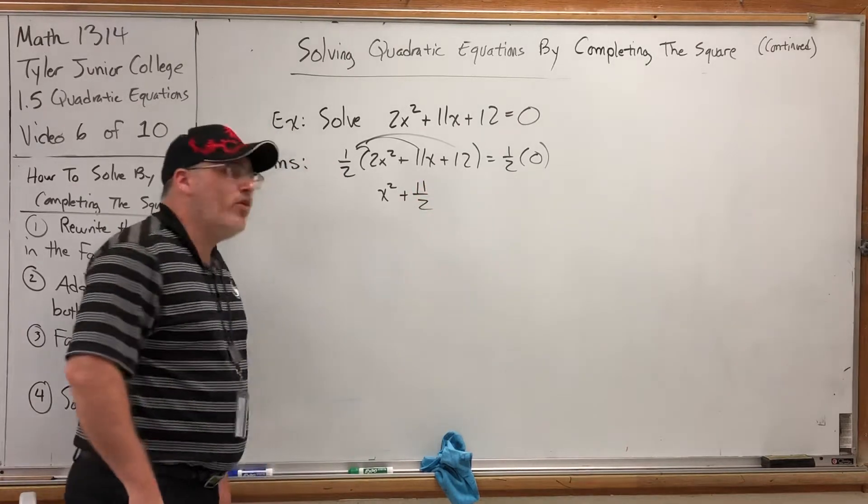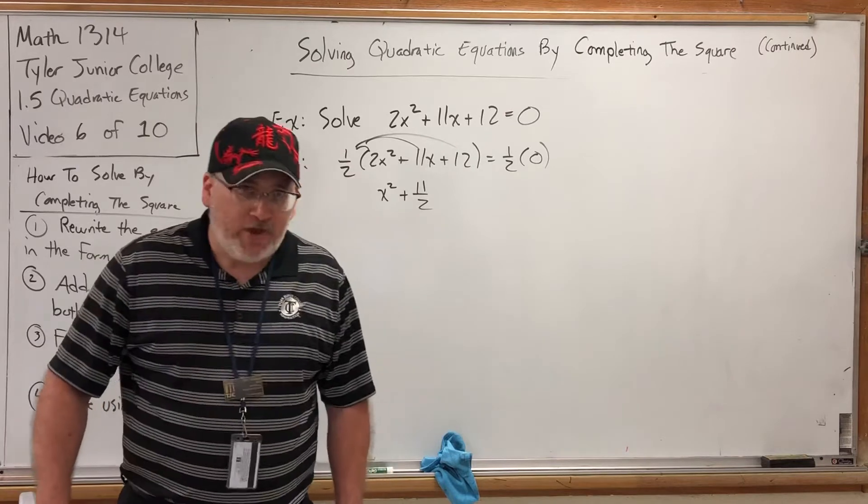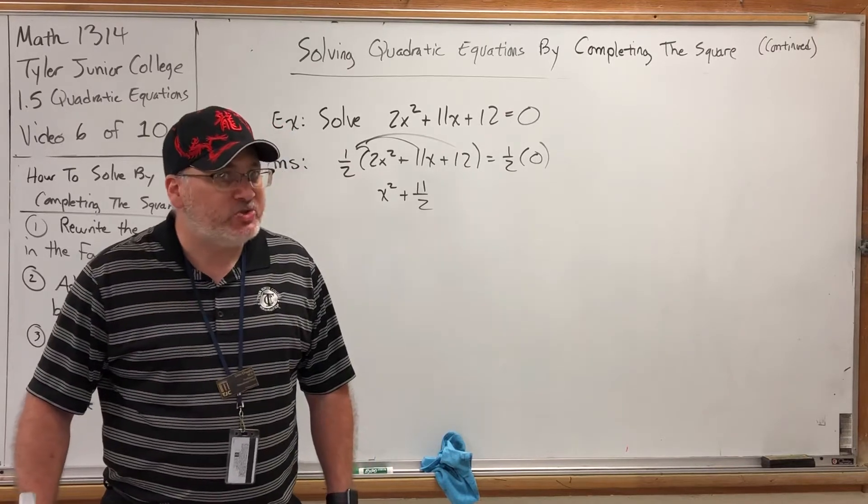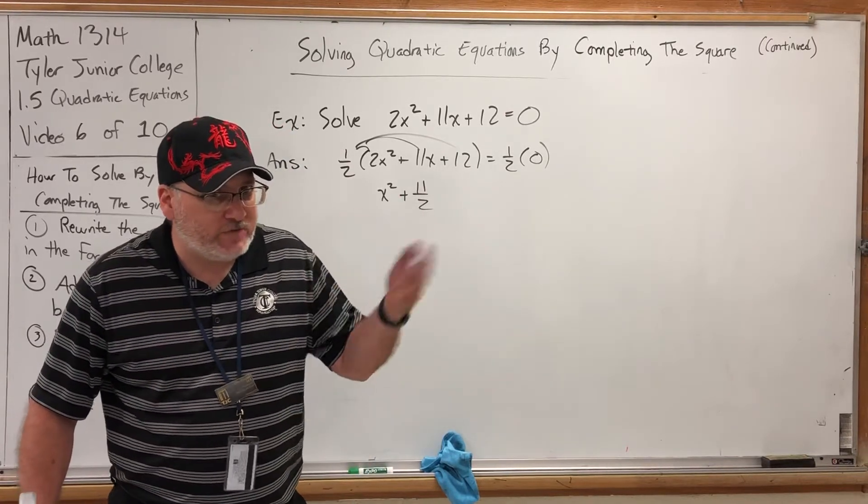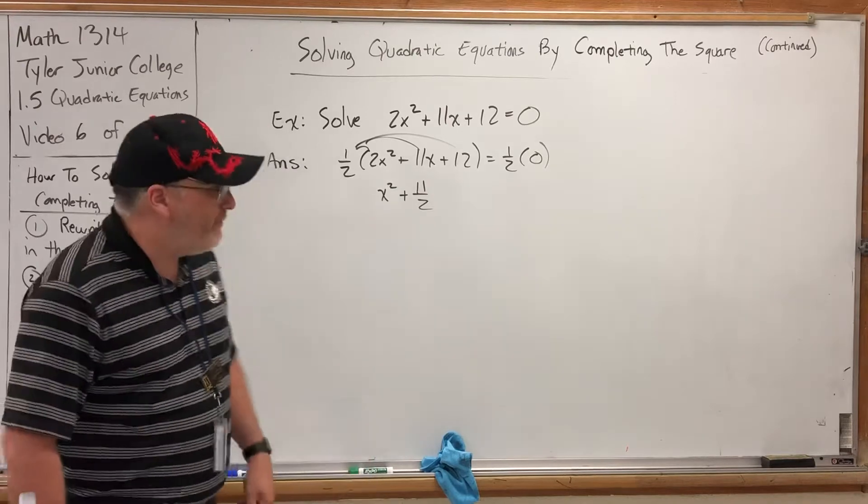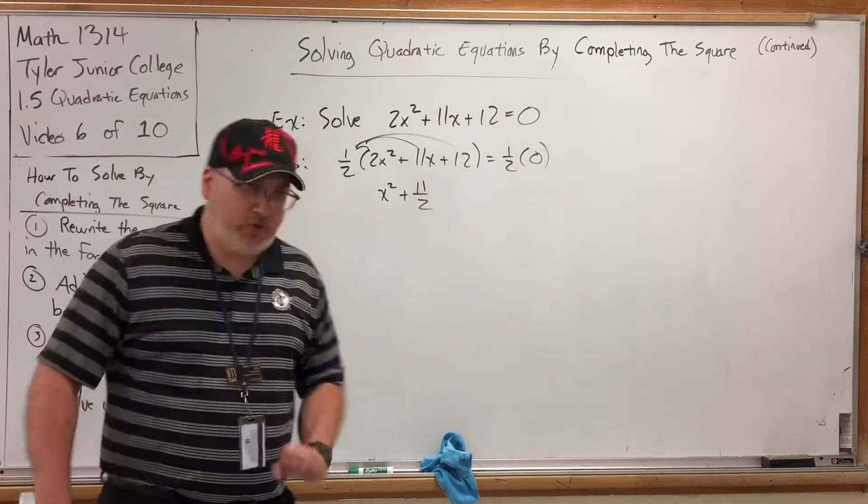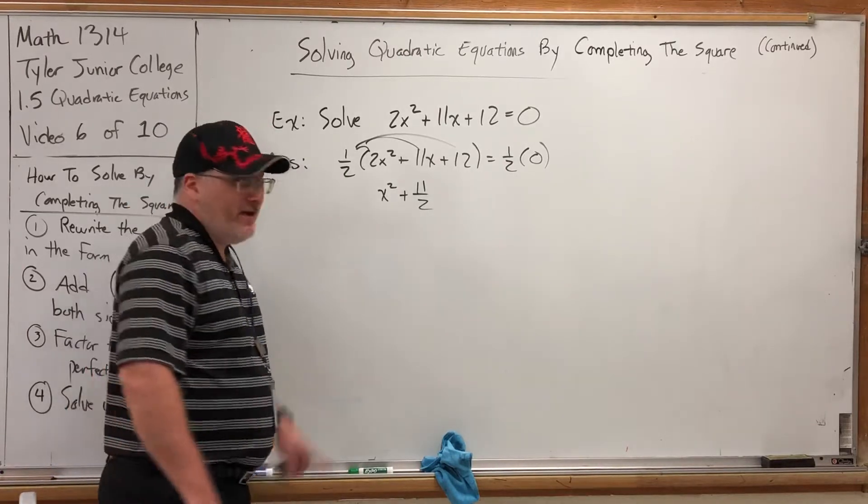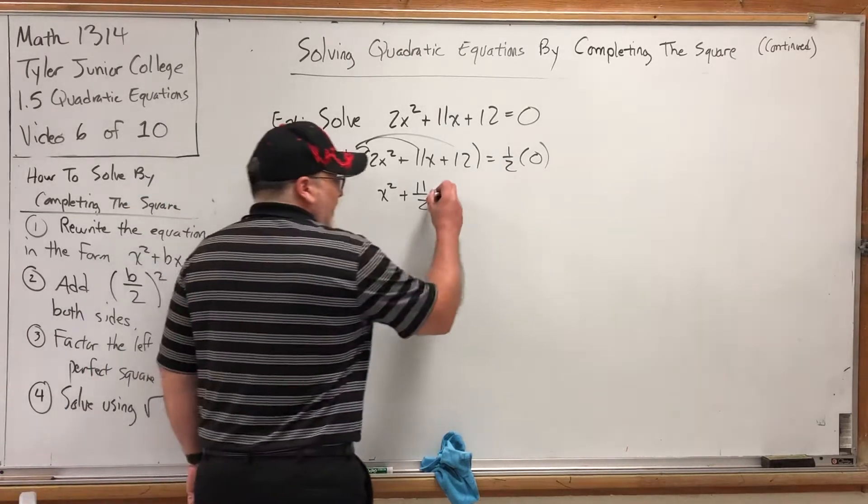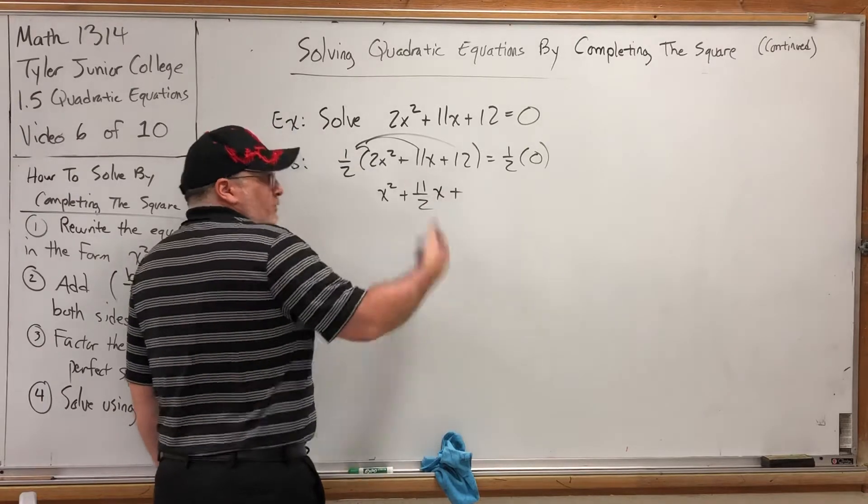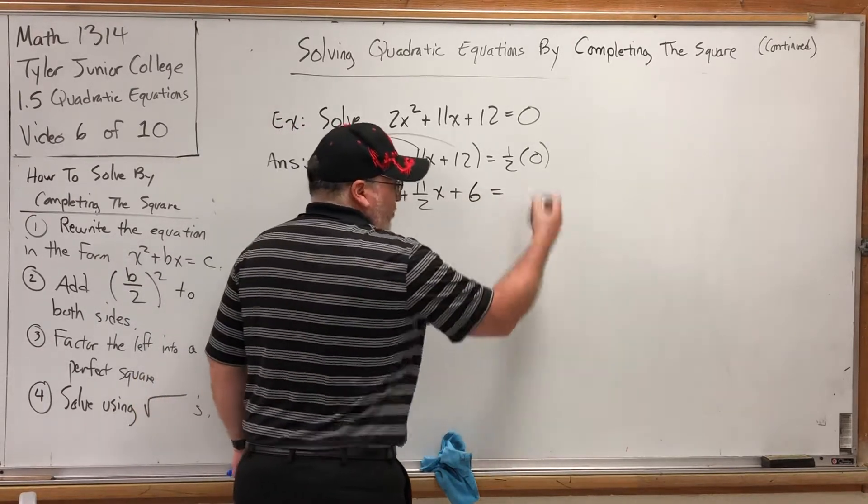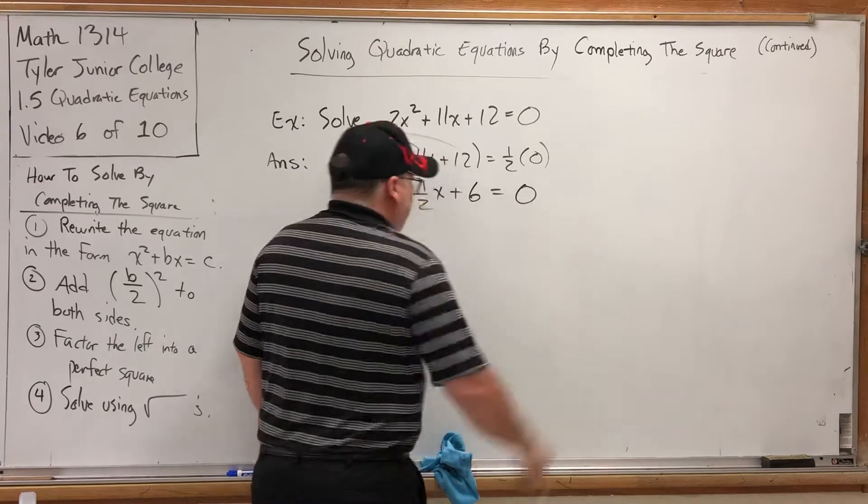Now, if you're going to write 5.5, stop. Quit being scared of fractions. They're just ratios of integers. In fact, don't ever use decimals in this class unless you're specifically asked to. So leave it as 11 halves, trust me. 11 halves x. Half of 12, that's just 6. And of course, half of 0, or anything times 0, is 0.